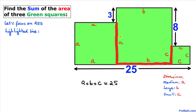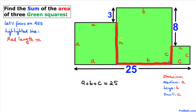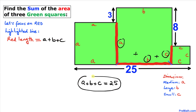Now let's focus on the red highlighted line. This consists of segment a from this point to this point, length b from this point to this point, and length c from this point to this point. So the total red length turns out to be a plus b plus c, which we know equals 25. So this red length is 25.